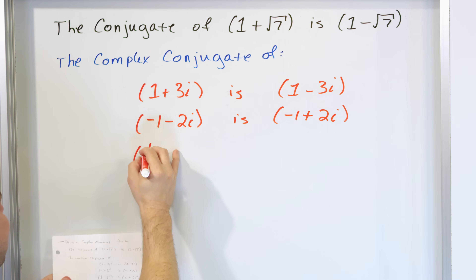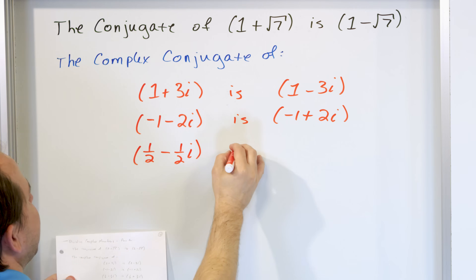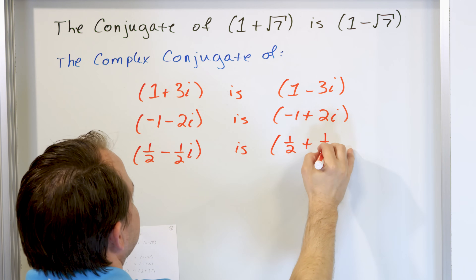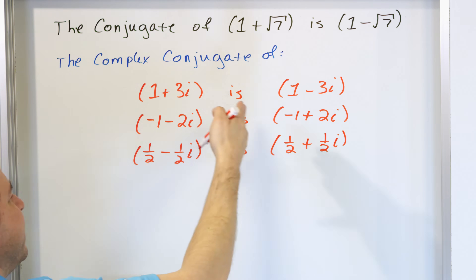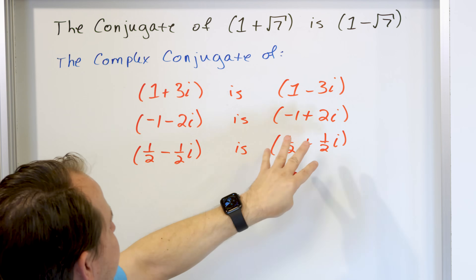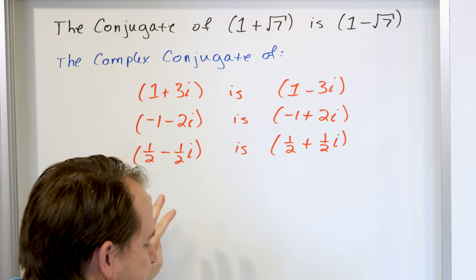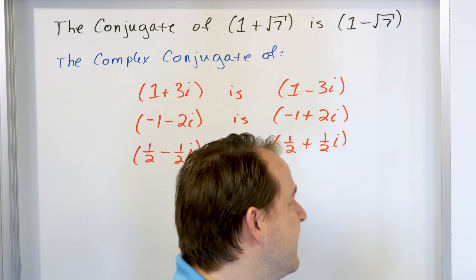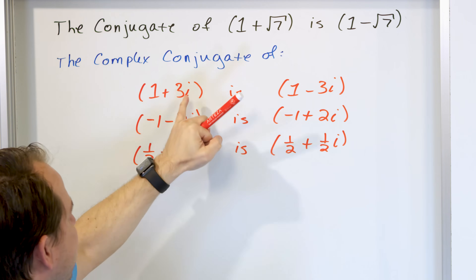One more example — it doesn't matter if you have fractions. If you have one-half minus one-half i, the complex conjugate is one-half plus one-half i. You make a copy and switch the sign — positive becomes negative, negative becomes positive. These complex conjugates happen in pairs, and notice that both are still complex numbers because they still have i's.